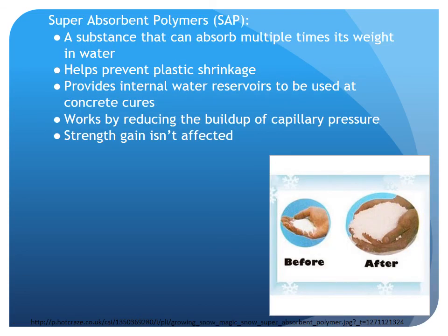Superabsorbent polymers, or SAPs, are a substance that can absorb multiple times their weight in water. They have been shown to help prevent plastic shrinkage by providing internal water reservoirs to be used as concrete cures. They work by reducing the buildup of capillary pressure, so there isn't the tensile stress on the surface of the concrete causing cracks.